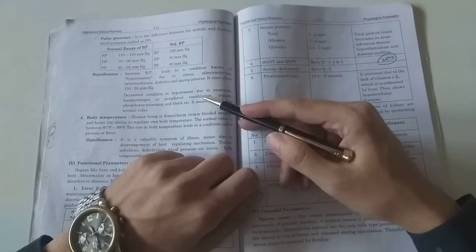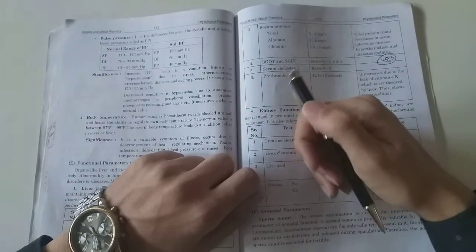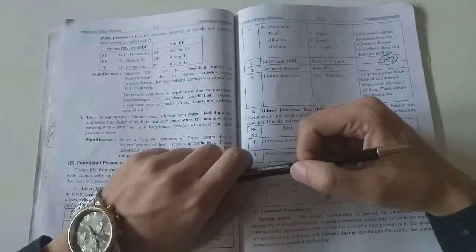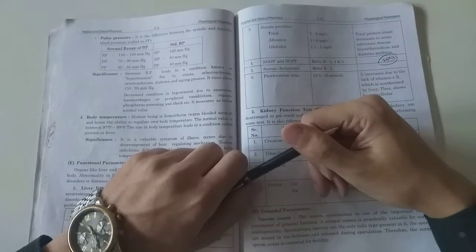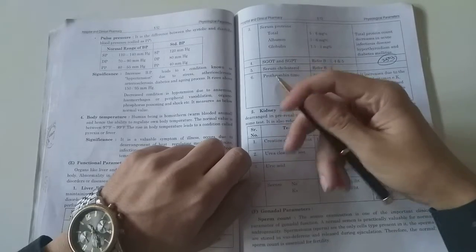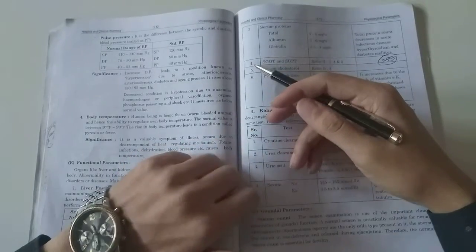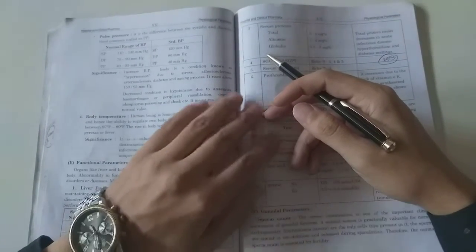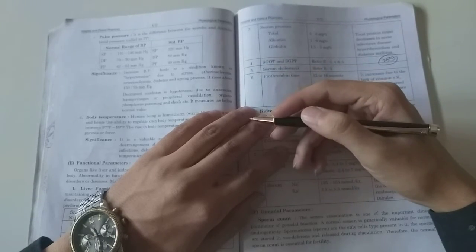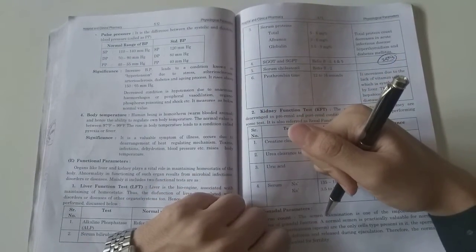The decreased condition is hypotension due to anemia, hemorrhage, peripheral vasodilation, organophosphorus poisoning, and shock. If blood pressure is decreased, we call it hypotension due to anemia, hemorrhage, peripheral vasodilation, or organophosphorus poisoning.